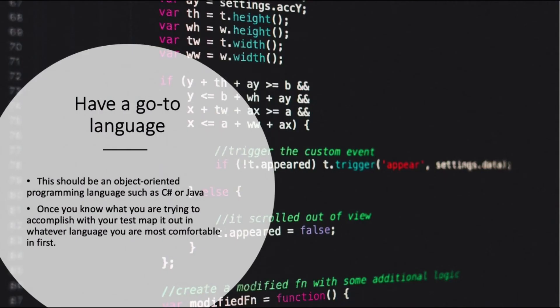Have a go-to language. As a software developer engineer in test doing automation, you need a go-to language. This should be an object-oriented programming language such as C-Sharp or Java. Once you have a solid understanding of one of these languages, learning other languages to code becomes very easy. All object-oriented programming languages have the same core concepts, just a different syntax.